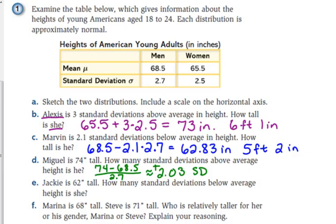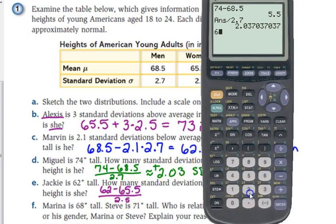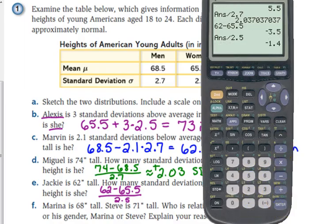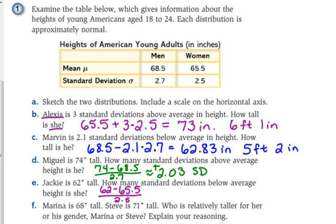Jackie is 62 inches tall. How many standard deviations below average is she? Again, take her number, subtract the mean, divide by the standard deviation. Make sure that you use the correct data. She is 1.4 below.